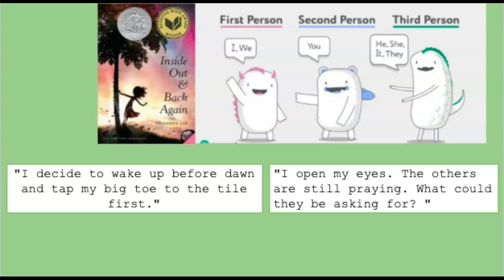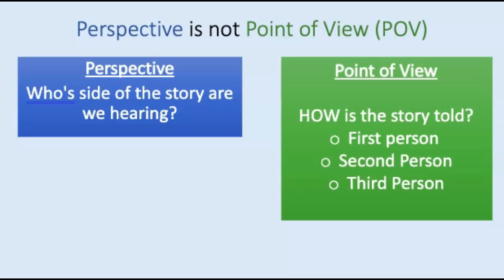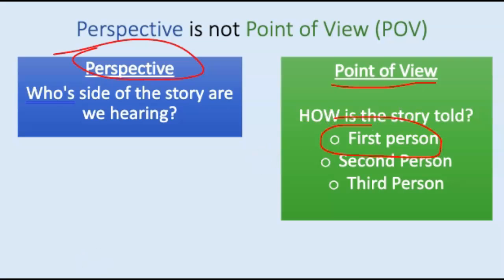So now let's think about what point of view Inside Out and Back Again is written in. If you need a quick reminder, take a look at these quotes from our book in the white boxes. What point of view is Inside Out and Back Again written in? Yep, it's first person. Ha is telling the story, so she uses pronouns like I, me, and our. So when we know what the point of view is, or how the story is told, we can figure out perspective. Perspective just means the side of the story that we are hearing, or the thoughts, feelings, and actions. Inside Out and Back Again is written in the first person point of view — but whose perspective is it told from? Whose side of the story are we hearing? Yep, we hear Ha's perspective.